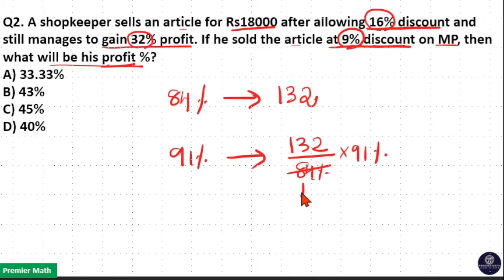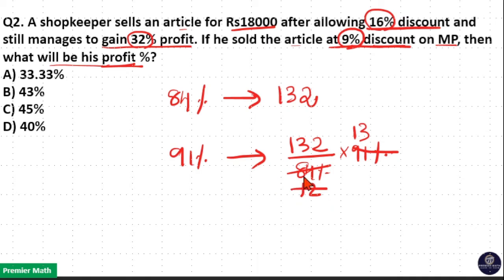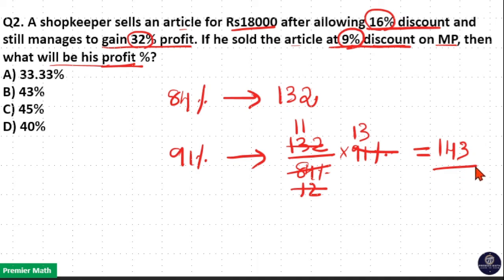Now simplifying: 7 goes 1 time in 8, 7 goes 2 times in 14. 7 goes 1 time in 9, 7 goes 3 times in 21. Then 12 goes 1 time in 13, 12 goes 1 time in 12. So 11 into 13 is equal to 143.